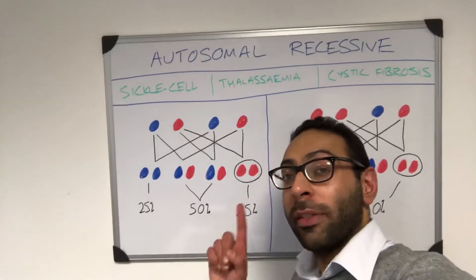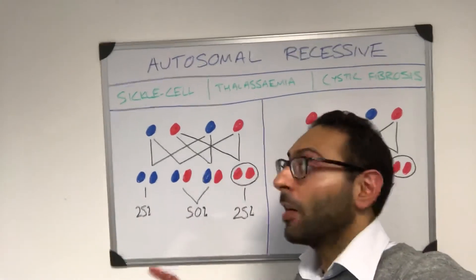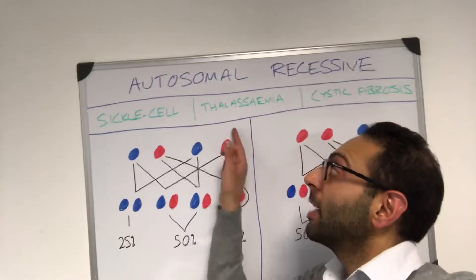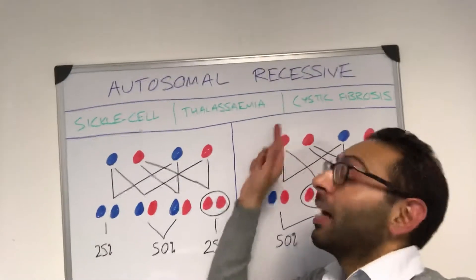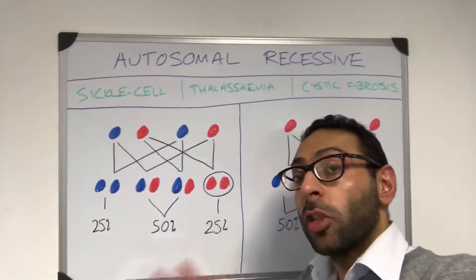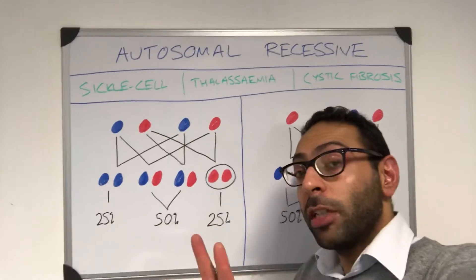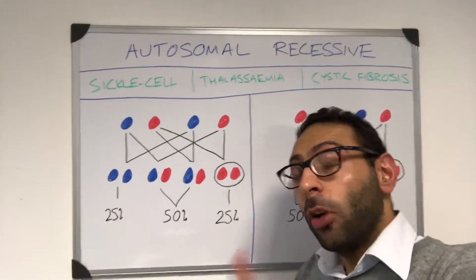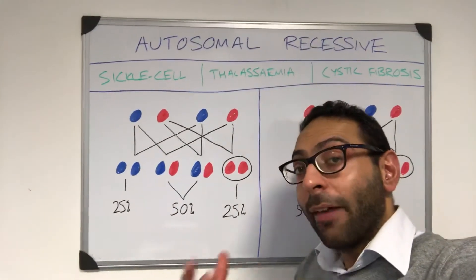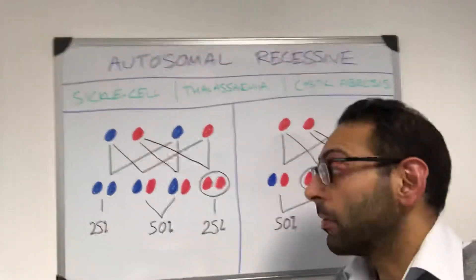Quick video on autosomal recessive conditions and two key scenarios — examples include sickle cell, thalassemia, and cystic fibrosis. In an autosomal recessive condition, you need both genes to be affected to have the condition, but if you've got one gene affected, you are a carrier of the condition as opposed to having it yourself.